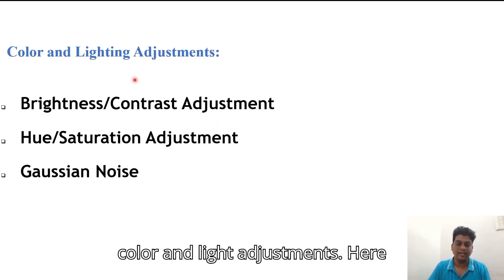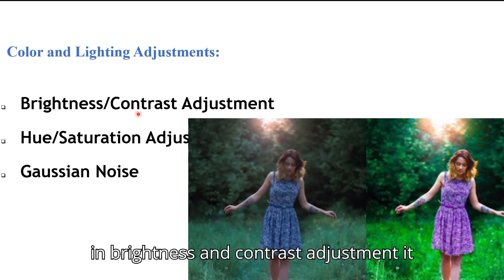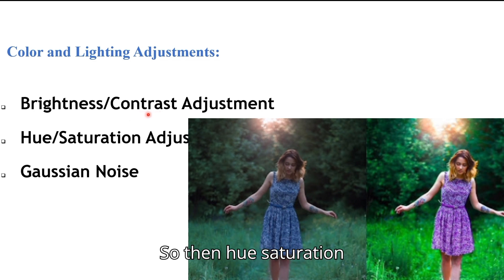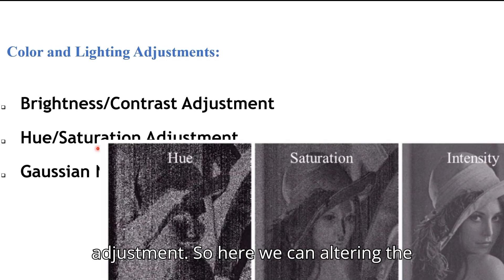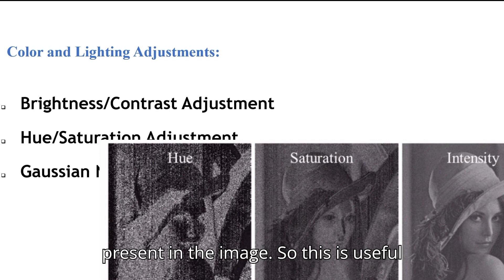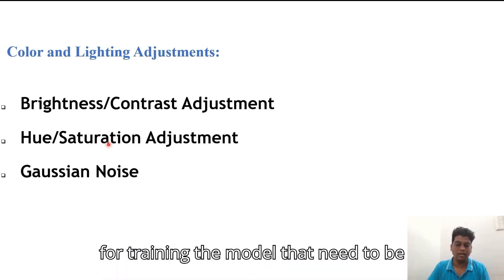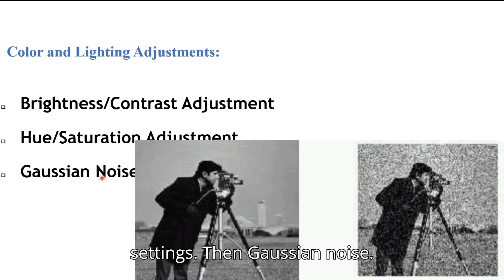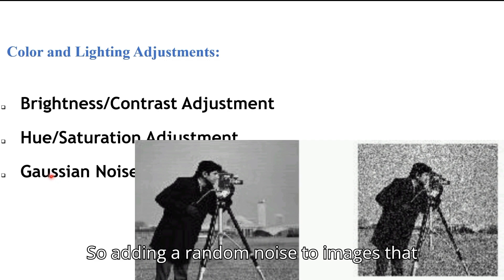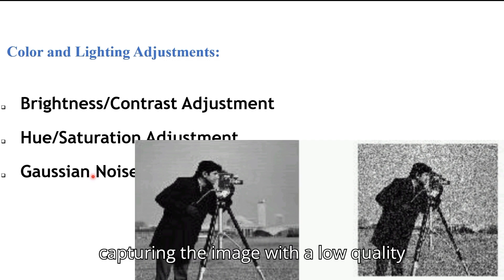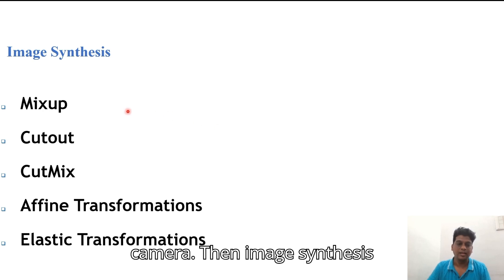Color and light adjustments include brightness and contrast adjustment, which varies the brightness and contrast to simulate different lighting conditions. Hue and saturation adjustment alters the color or saturation, changing the distribution of colors present in the image. This is useful for training models that need to perform well across different color settings. Adding Gaussian noise — adding random noise to images — can make the model robust to noisy inputs, such as when capturing images with a low quality camera.